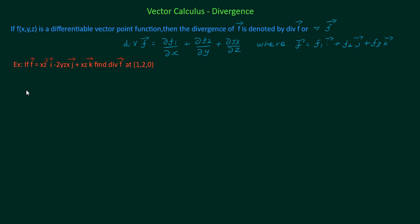Let's solve this example. The given problem has three variables, x, y and z. So the divergence of f vector is ∂f1/∂x + ∂f2/∂y + ∂f3/∂z.